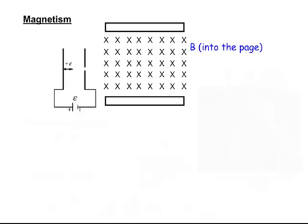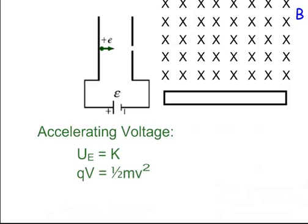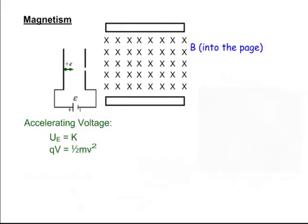Let's move on to magnetism. A magnetism problem is when we have a charge moving at some velocity entering a magnetic field. We're going to use three main equations. Our first is the accelerating voltage from electrostatics — potential equals kinetic: QV equals one half mV squared — to find the velocity of the charge. After finding the velocity, we look at what happens to the positive charge as it enters the magnetic field, where it will have circular motion.